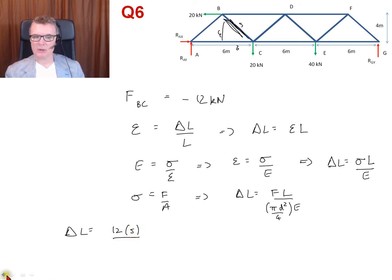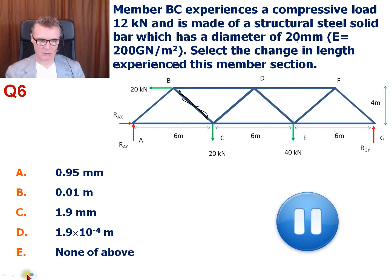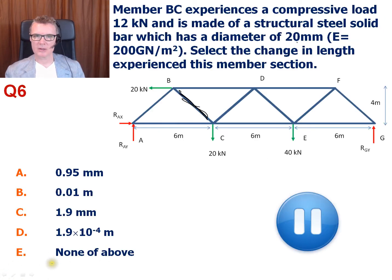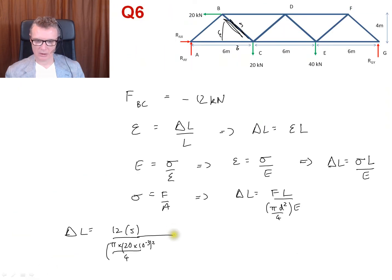The diameter is 20 millimeters. So I've got pi times 20 times 10 to the minus 3, squared, divided by 4. And the Young's modulus is 200 gigapascals.